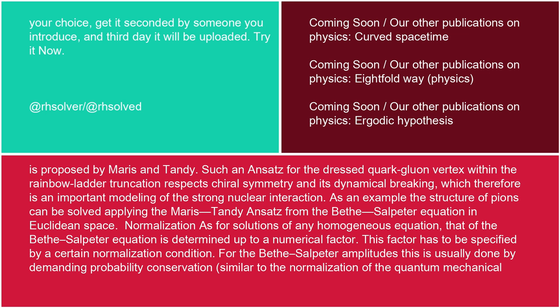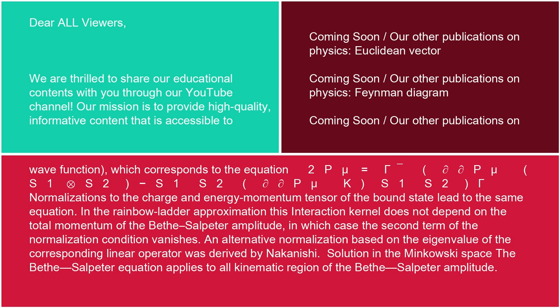Normalization: as for solutions of any homogeneous equation, that of the Bethe-Salpeter equation is determined up to a numerical factor. This factor has to be specified by a certain normalization condition. For the Bethe-Salpeter amplitudes, this is usually done by demanding probability conservation, similar to the normalization of the quantum mechanical wave function, which corresponds to the equation: 2Pμ equals Γ̄ · (∂/∂Pμ)(S₁ ⊗ S₂) minus S₁S₂ · (∂/∂Pμ)K · S₁S₂ · Γ. Normalizations to the charge and energy-momentum tensor of the bound state lead to the same equation. In the rainbow ladder approximation, the interaction kernel does not depend on the total momentum of the Bethe-Salpeter amplitude, in which case the second term of the normalization condition vanishes. An alternative normalization based on the eigenvalue of the corresponding linear operator was derived by Nakanishi.